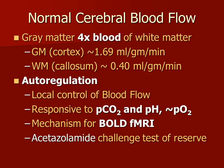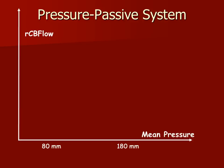We can also test this actively by giving the patient acetazolamide and watching for an increase in cerebral perfusion. In a pressure-passive system, cerebral blood flow is going to be linearly related to mean arterial pressure.